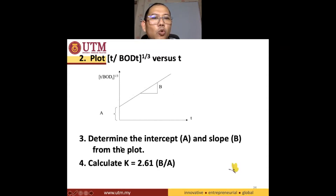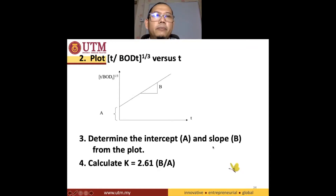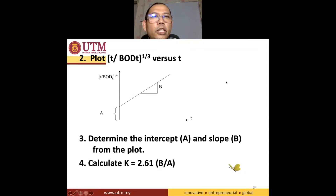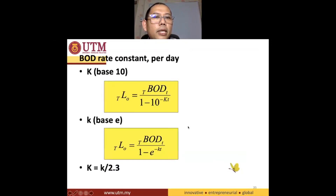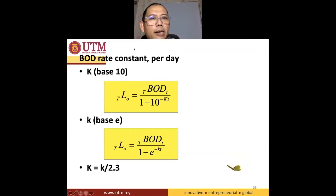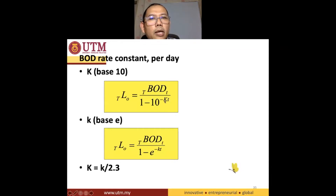K is actually 2.61 times B divided by A — so that is our K. Sometimes BOD can be expressed using big K, and sometimes it can be expressed using small K. This one is base E, not base 10 — natural log. So how is big K related to the small K?